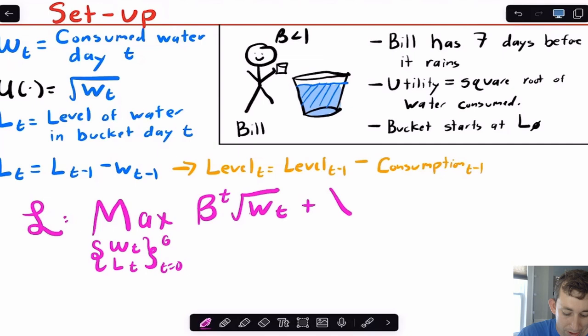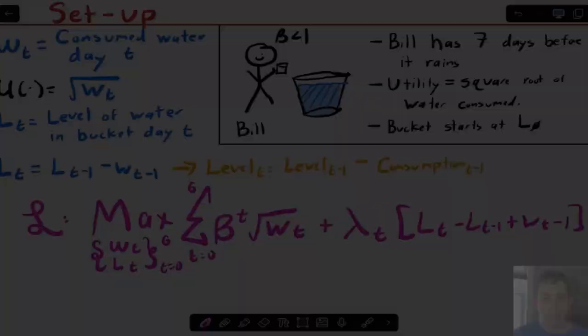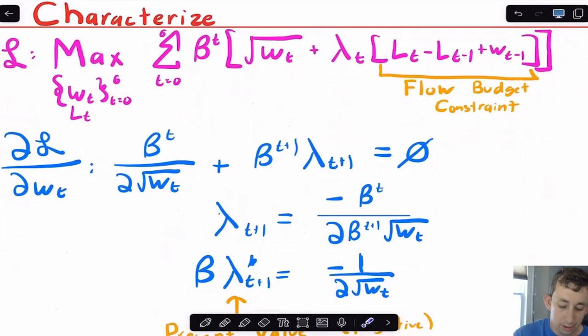I'm also going to have a lambda or a Lagrange multiplier for every day. The Lagrange multipliers are against my constraint, which is the level of water in the bucket. So this is just going to be LT minus LT minus one plus WT minus one, that's for every day. What I need to do is sum this up from T equals zero until T equals six. Notice that this is a flow budget constraint instead of a stock constraint. I'll talk about that in a separate video. But now I'm all ready to characterize the solutions.